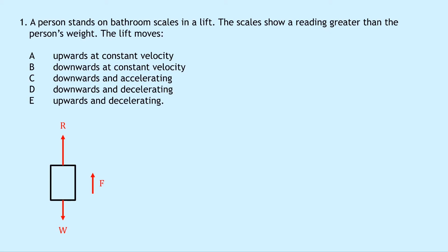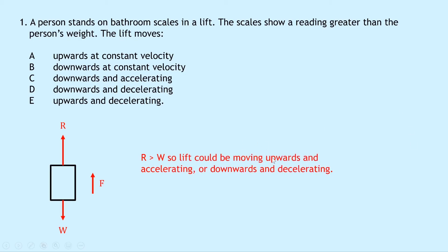From the theory video, there are two cases where the reading is greater than the person's weight: the lift moving upwards and accelerating, or downwards and decelerating. Looking at the options, the only match is D — downwards and decelerating. Constant velocity eliminates A and B because balanced forces mean the reading equals the weight. Option C — downwards and accelerating — means an unbalanced force downward, so weight exceeds reaction. Option E — upwards and decelerating — also means unbalanced force downward, so weight again exceeds reaction force. So the answer is D.